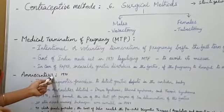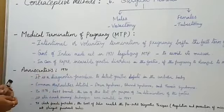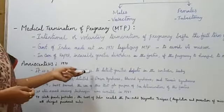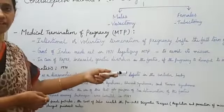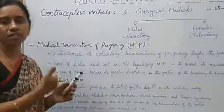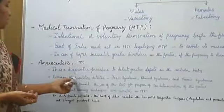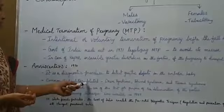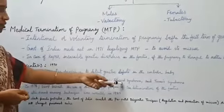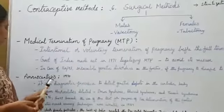Then amniocentesis — it was started in 1917 in India. It is a diagnostic procedure to detect genetic defects in the fetus. By that, the persons may go for MTP. The common genetic disorders or abnormalities detected are Down syndrome, Edwards syndrome, and Turner syndrome in the fetus.